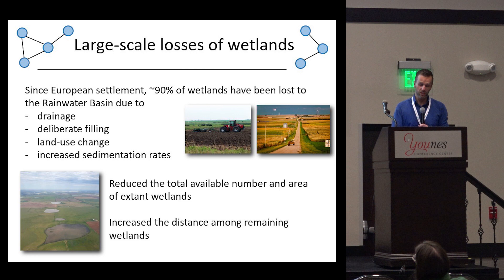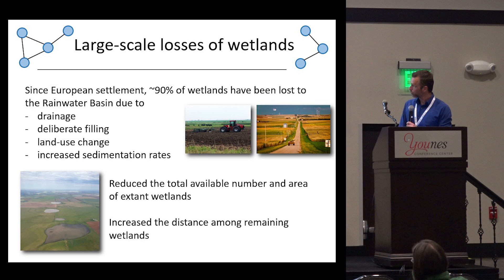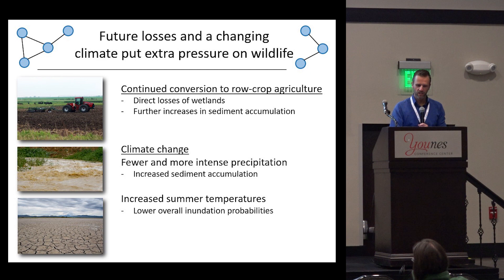Of course, we know there have been large-scale losses of wetlands. Since European settlement, about 90% of these wetlands have been lost from the Rainwater Basin due to drainage, deliberate filling, land use change, increased sedimentation rates, and their interactions. This has not only reduced the total number and area of remaining wetlands, but also increased the distance among those that remain.